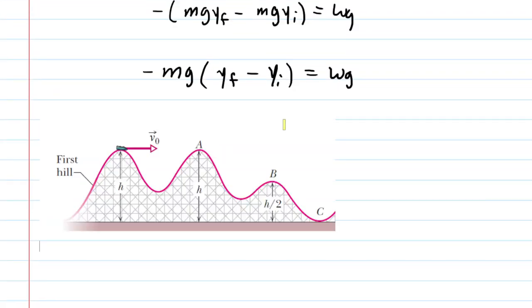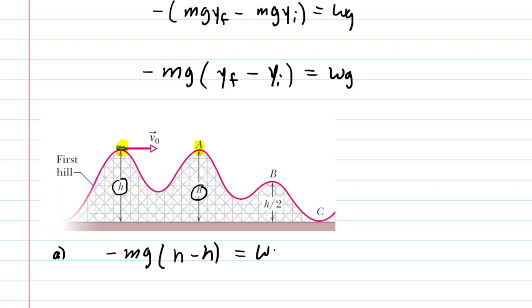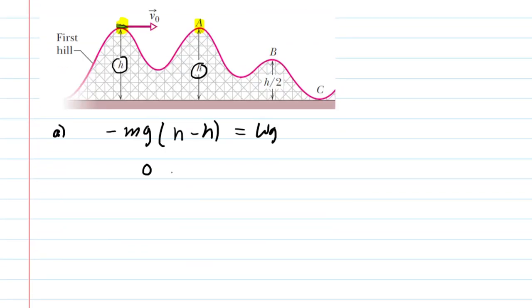Let's take a look at the picture again. In part A, we are seeking to calculate the work done by the gravitational force from this initial point over to point A. The first thing to notice is that at those two points, the heights are both H. So we would have negative MG times H minus H, which of course equals zero. The correct answer to part A is that the work done by the gravitational force is simply zero joules.